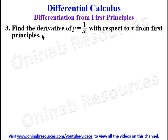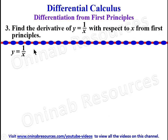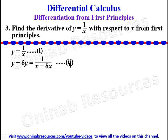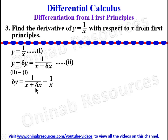We go to problem 3. Find the derivative of y = 1/x with respect to x from first principles. We have y = 1/x as equation 1. Then increasing y and x, we have y + delta y = 1/(x + delta x) as equation 2. Equation 2 minus equation 1: y cancels y, and we are left with delta y = 1/(x + delta x) − 1/x. We simplify using the LCM of the denominators.